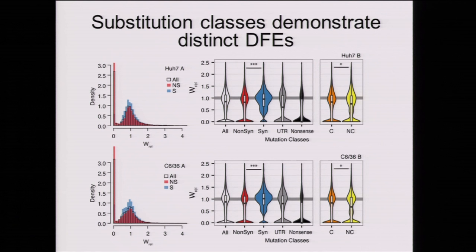We can further break down these DFEs—background distribution in white, non-synonymous in red, synonymous in blue. Looking at mutations in the viral UTR, we see a large proportion are lethal. Nonsense mutations along the genome are, if not all, lethal. We can also break down non-synonymous substitutions into conservative and non-conservative, and again see the expected relationship with fitness.